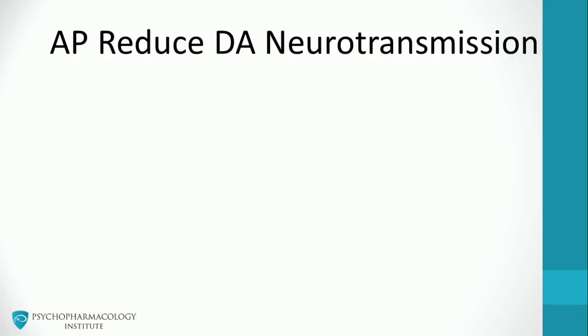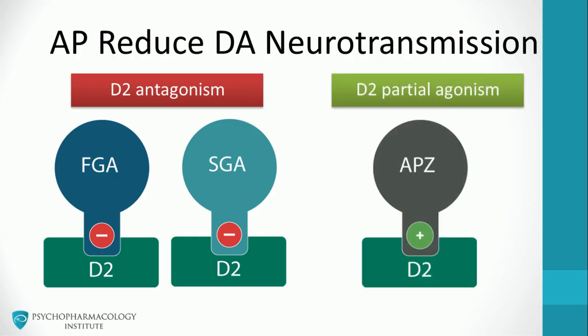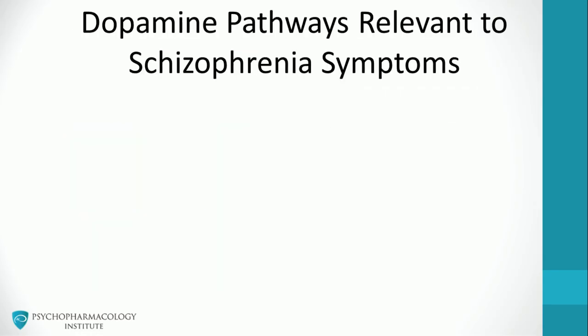We'll study how antipsychotics reduce dopaminergic neurotransmission. There are two options. The first is through D2 antagonism — both first and second generation antipsychotics can block D2 receptors. The second option is through partial agonism. At this time, the only approved third generation antipsychotic is aripiprazole, and we'll discuss its mechanism of action in another video.